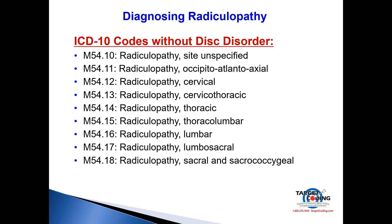Now we switch gears to radiculopathy codes without any disc disorder — no herniation, no disc pathology involved. M54.10 is radiculopathy, site unspecified — stay away from that one. M54.11 is radiculopathy at the occipital-atlantoaxial level, M54.12 is cervical radiculopathy, and M54.13 is cervicothoracic radiculopathy.